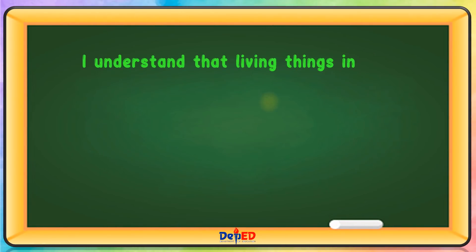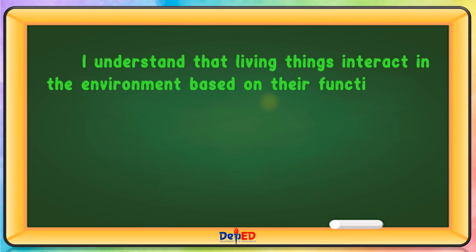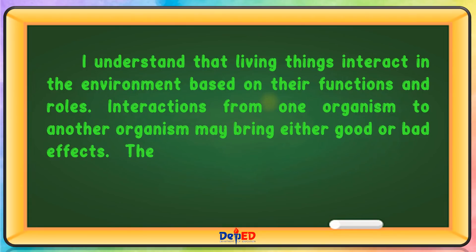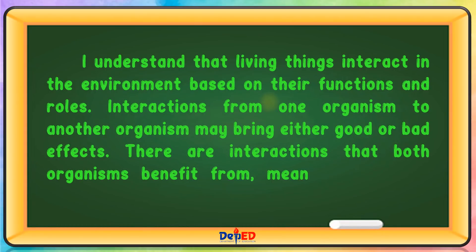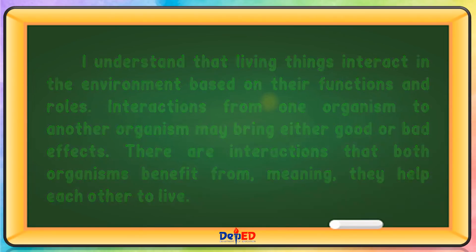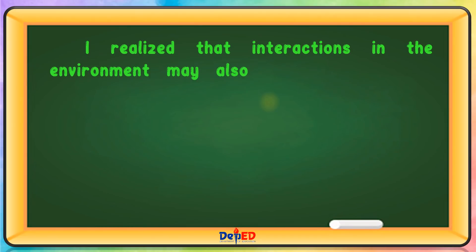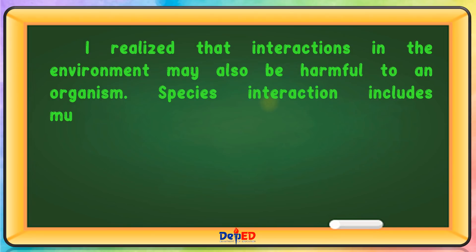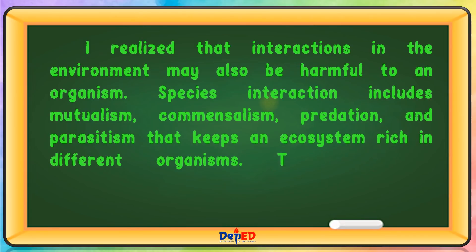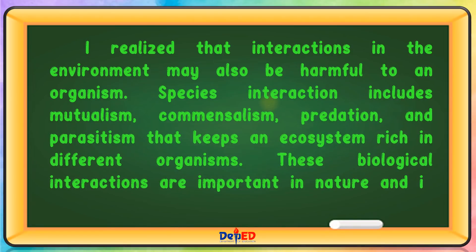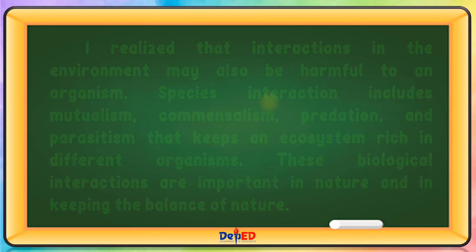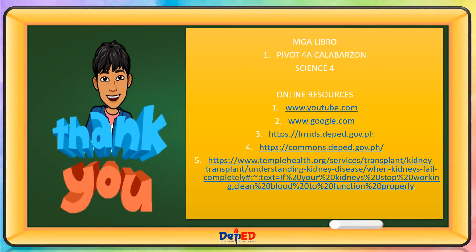Living things interact in the environment based on their functions and roles. Interactions from one organism to another may bring either good or bad effects. Species interactions include mutualism, commensalism, predation, and parasitism, which keep an ecosystem rich in different organisms. These biological interactions are important in nature and in keeping the balance of nature. Thank you for watching — till our next science lesson. Goodbye!